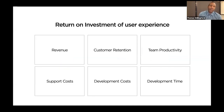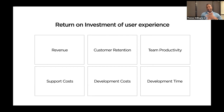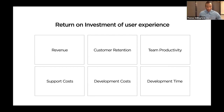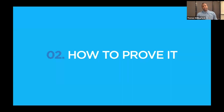There are six key areas of the business where ROI hits: revenue, customer retention, team productivity, support costs, development costs, and development time. These are all facets of it and we'll touch on all of them throughout the talk. The big question is: how do you prove it? How do you prove to the business that they should invest in UX?